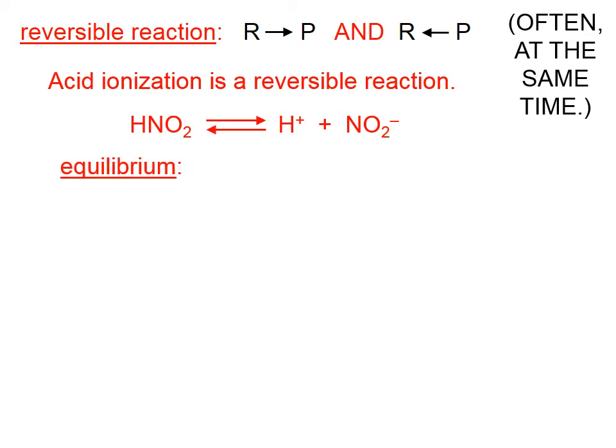Here we have nitrous acid ionizing into hydrogen ion and nitrite ion, and, as you can tell by the double arrow, at the same time, we have hydrogen ion and nitrite ion recombining to form nitrous acid molecules.